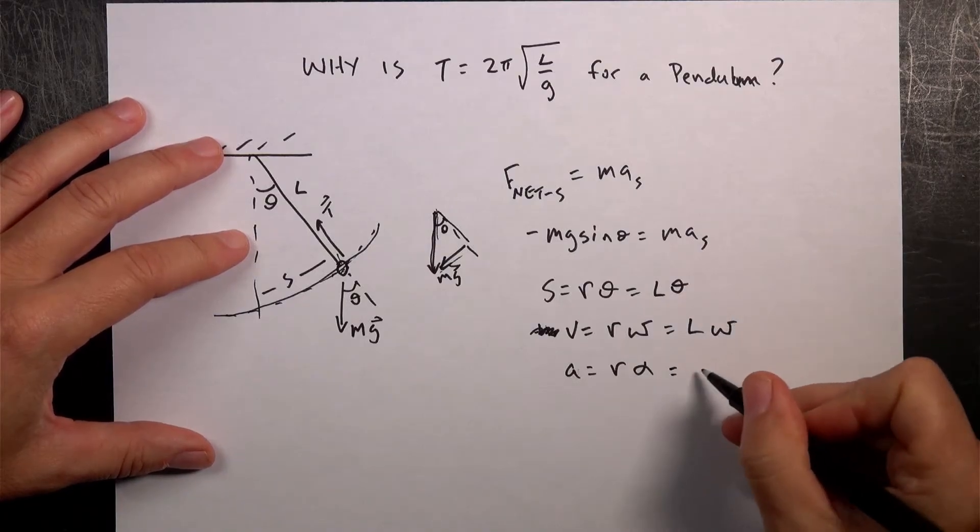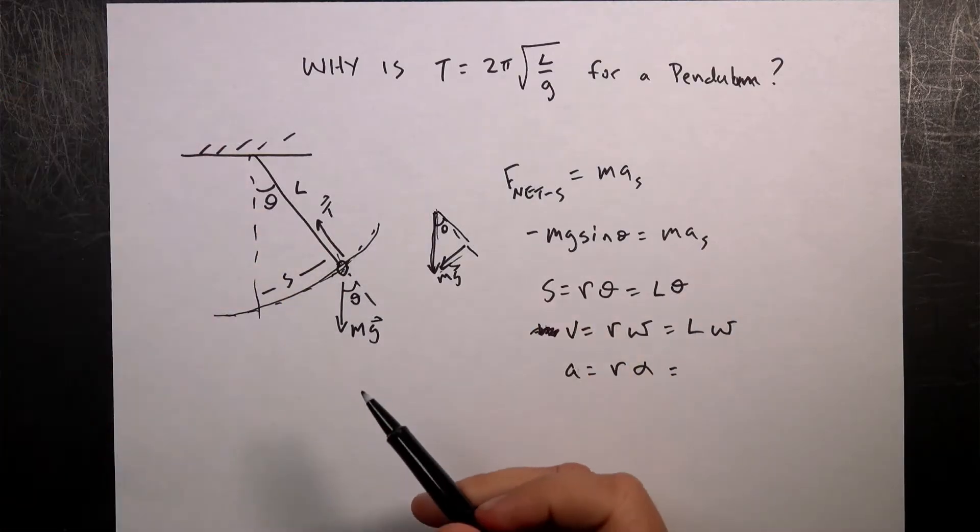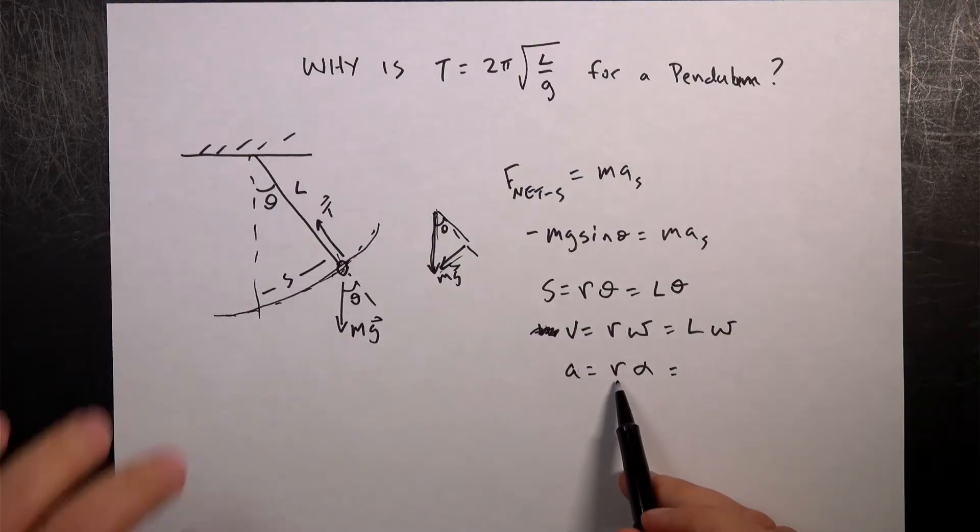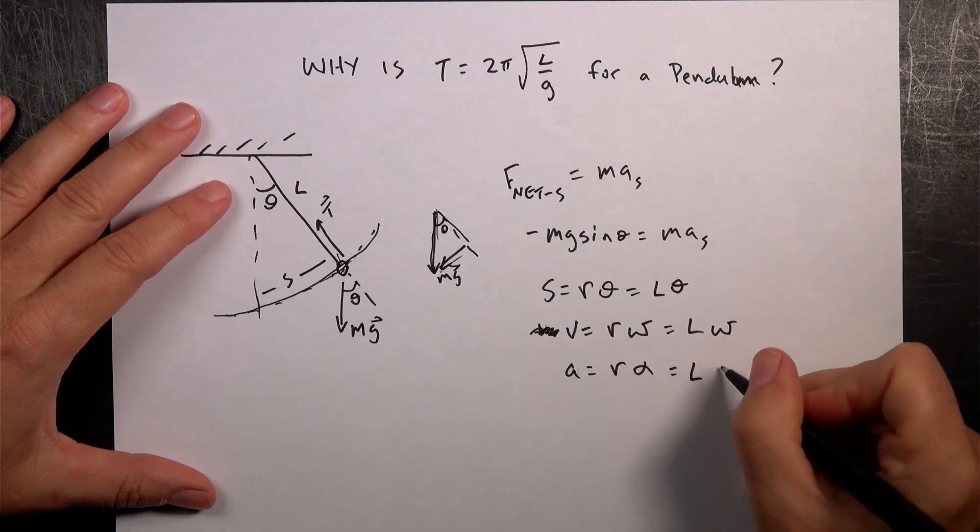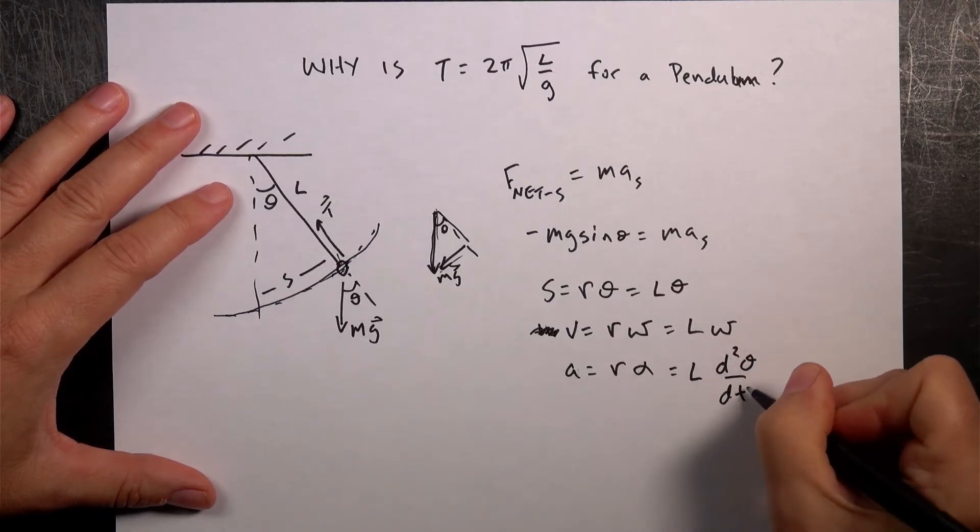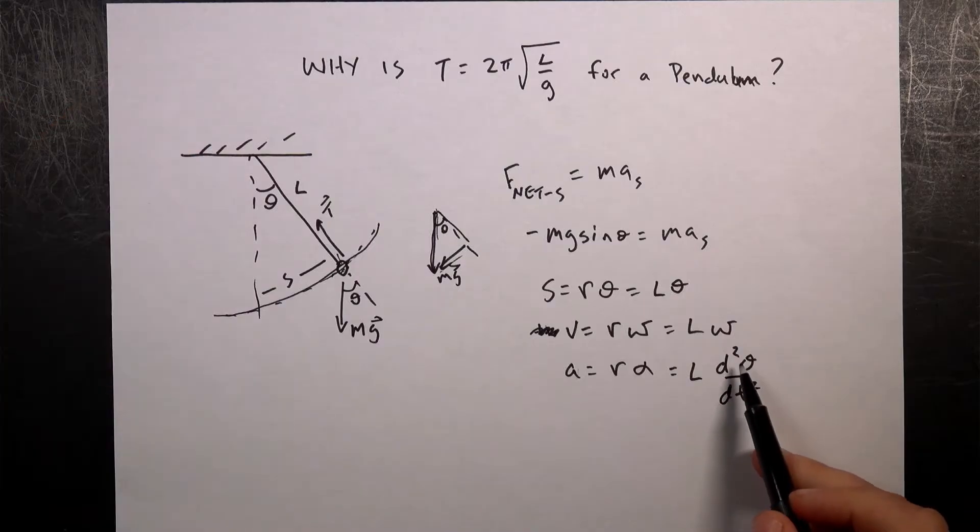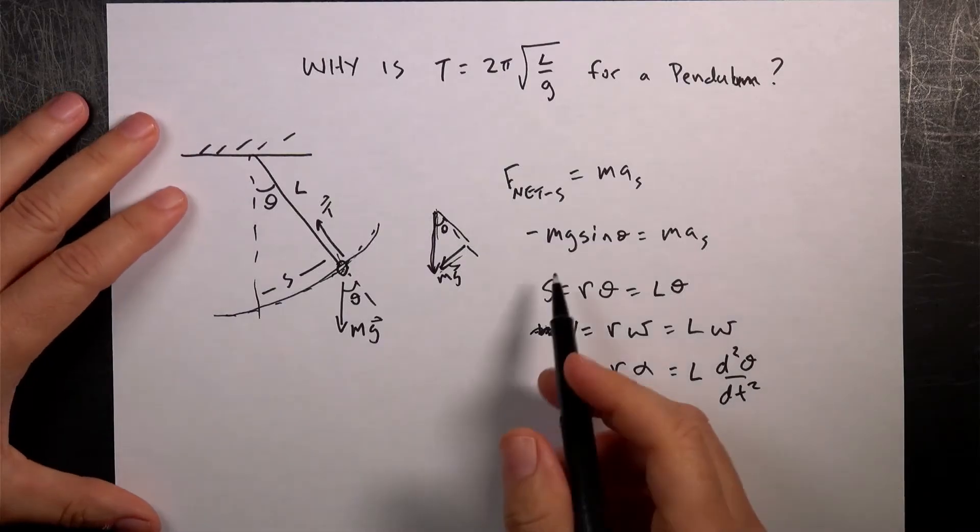If I want to find the velocity of this, then I multiply the angular velocity by R, where the angular velocity is in radians. In this case, that's actually L omega. And the same thing is true for the acceleration in this direction, the tangential acceleration, I take the radius of the circle, L, times the angular acceleration, alpha. Now, remember, that's going to be the second derivative of theta with respect to time. That is the definition of the angular acceleration.